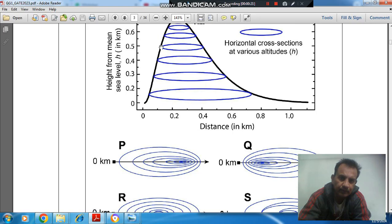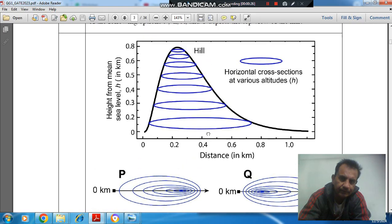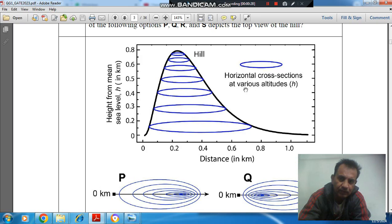So this is your height from sea level and horizontal cross sections at various altitudes. These are the cross sections.